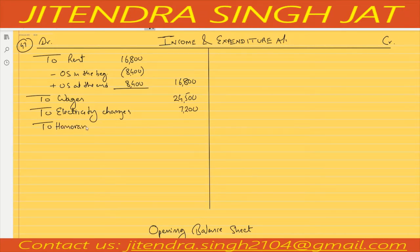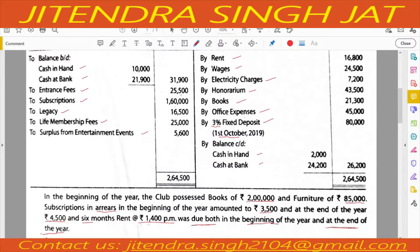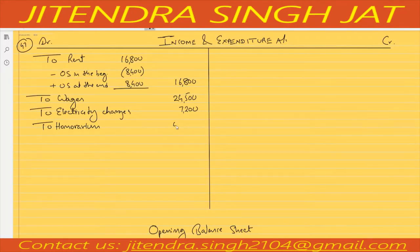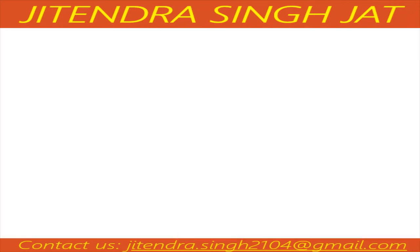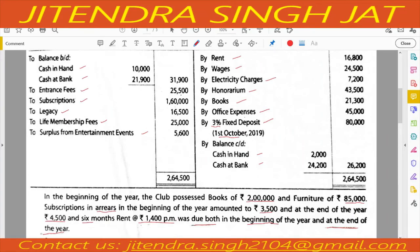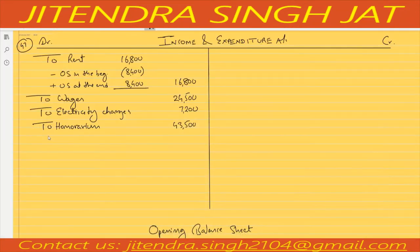Honorarium is also an expense at 43,500. Books will move to the Balance Sheet. Office expenses of 45,000 will come on the expenditure side.